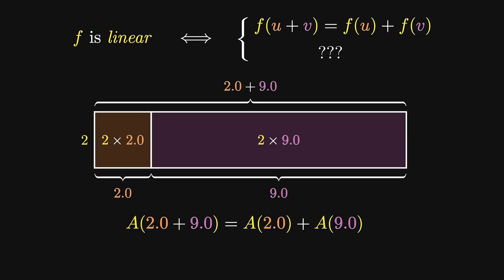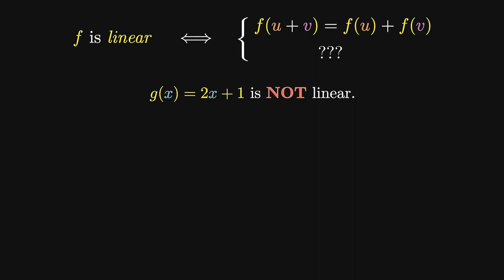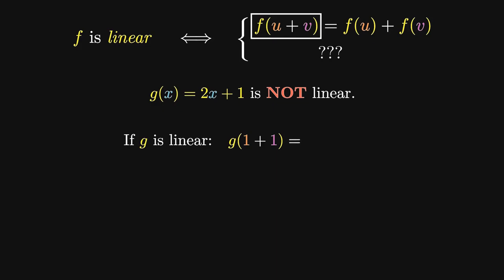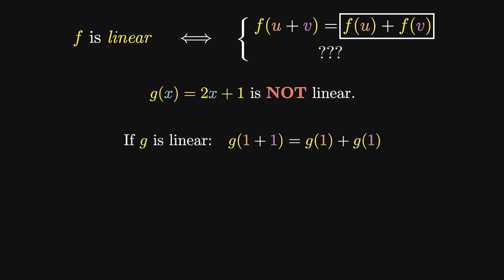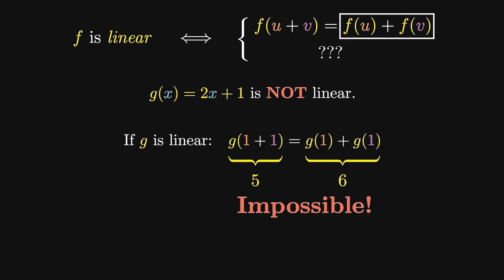There is a second condition required for a function to be linear, but we're going to explore that later on. This tells us from the get-go that the function g of x given by 2 times x plus 1 cannot be a linear function. And how do we know this? Well, suppose g is a linear function. Let's consider the quantity g of 1 plus 1. If g is linear, then g should be able to split up addition, so the right-hand side should equal g of 1 plus g of 1. You can verify that the left-hand side simplifies to the number 5, and the right-hand side simplifies to the number 6. So if g is linear, 5 equals 6. But this is clearly impossible, which tells us that g cannot be linear.